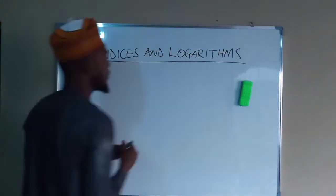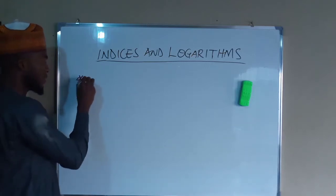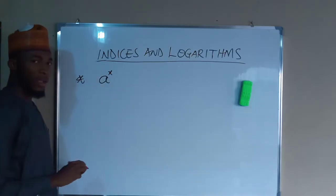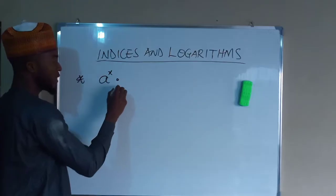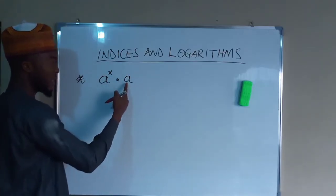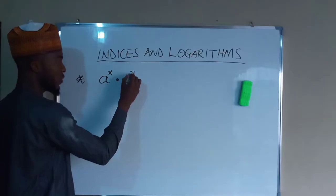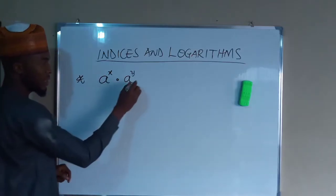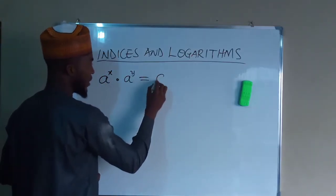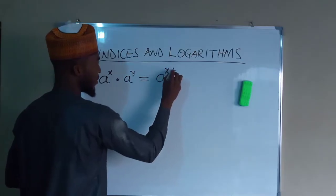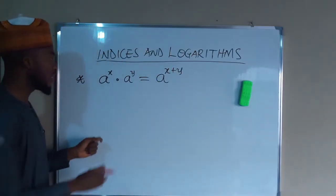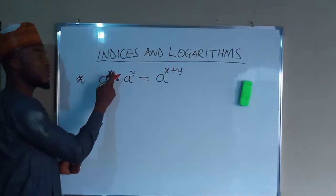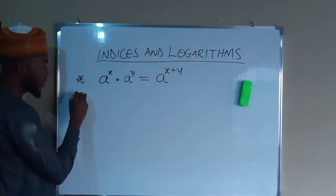You need to know the laws governing indices. The first law of indices is: when you have a number A raised to the power of X, and you multiply it by another number A raised to the power of Y, as long as the bases are the same, you are going to have A raised to the power of X plus Y. This means that if the bases are the same and they are multiplying each other, all you have to do is add the powers together.